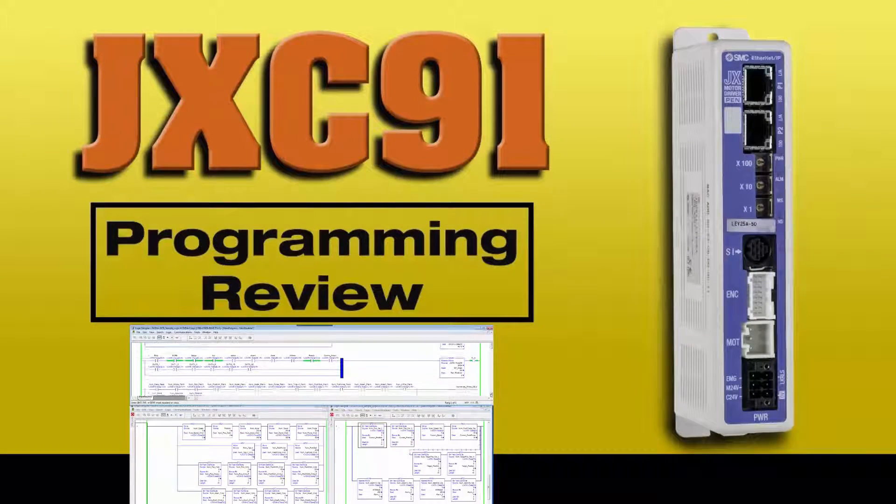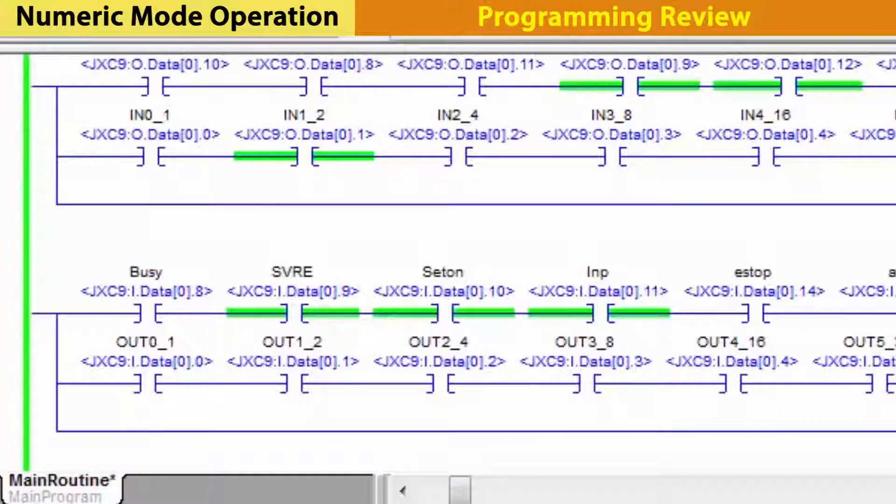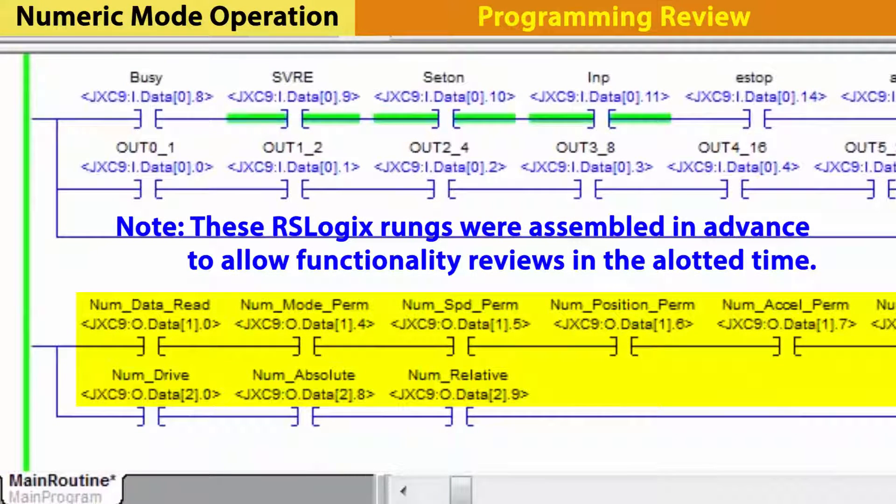Now, let's look at the numeric mode programming rungs. Here, we see numeric status data rung for data outputs as per the operation manual. Once on, these bits control position, speed, acceleration, and other status values of the actuator as needed.